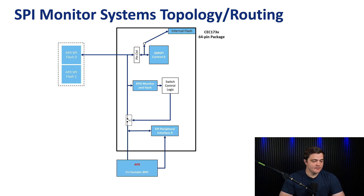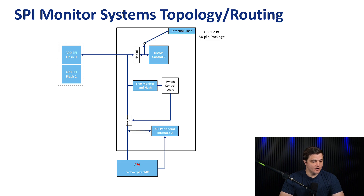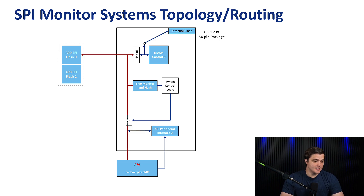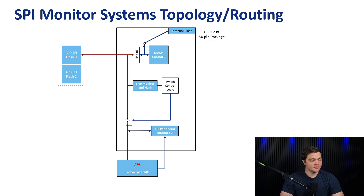Finally, we have the block that represents our application processor. For this example, we'll say that we're in a data center application with a BMC application processor. The SPY block just above the application processor allows it to chip select between the SPY components that you have externally. Once we are in the runtime, this SPY Monitor is going to sit and snoop the SPY traffic that is on your bus. If it detects any violations, there are a couple of ways it can respond — and it does have this analog switch at its disposal to disconnect the SPY bus in the event that something malicious is going on.